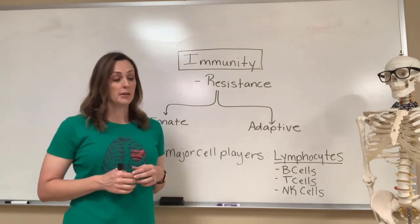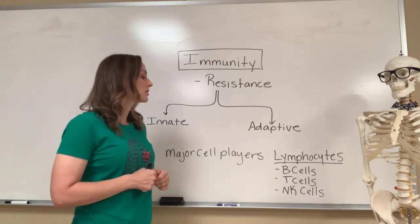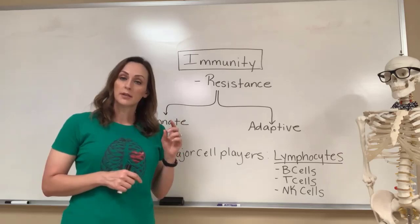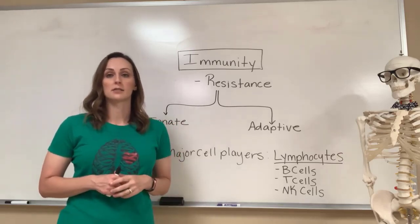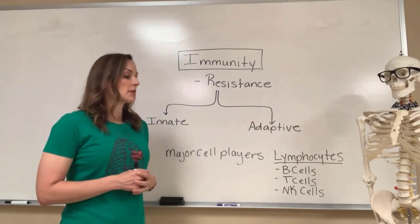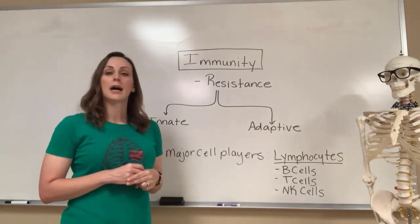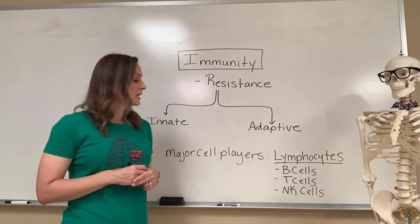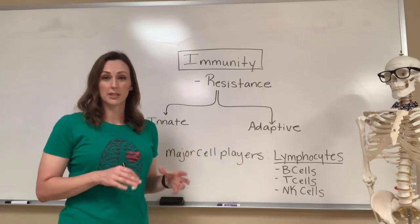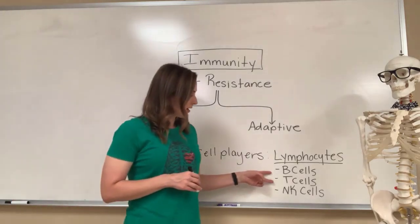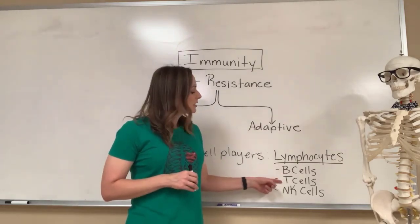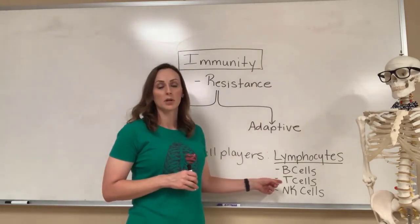Group two will migrate to the thymus — we talked about where the thymus was in part one of the lymphatic system — and will develop in an environment isolated from the blood. T cells will differentiate with exposure to hormones. Two of these are kind of obvious: B cells develop in the bone marrow — B for bone marrow — and T cells develop in the thymus.